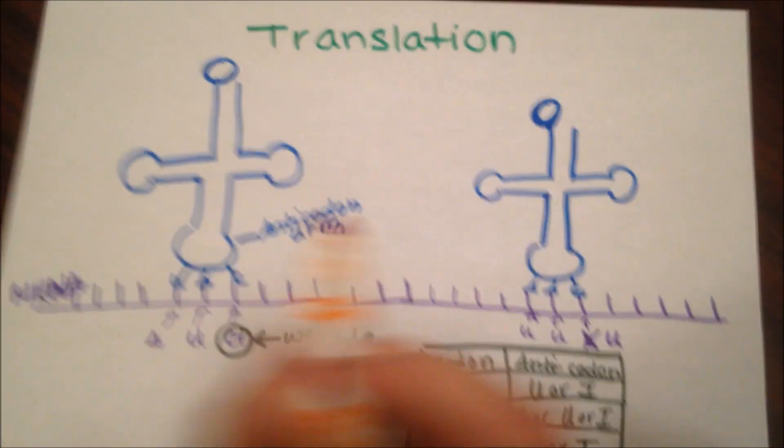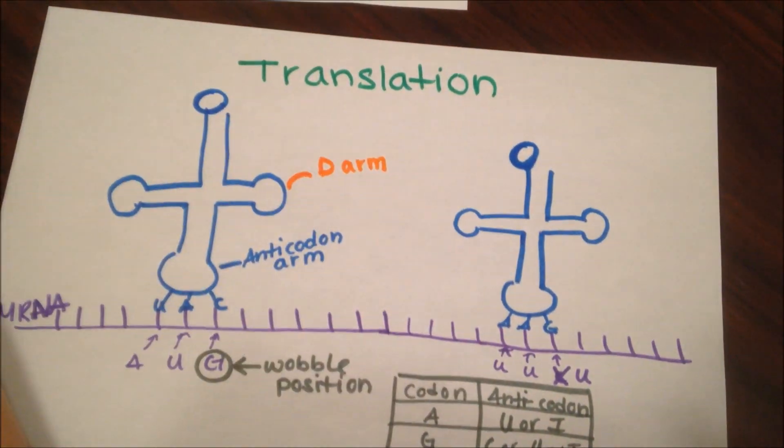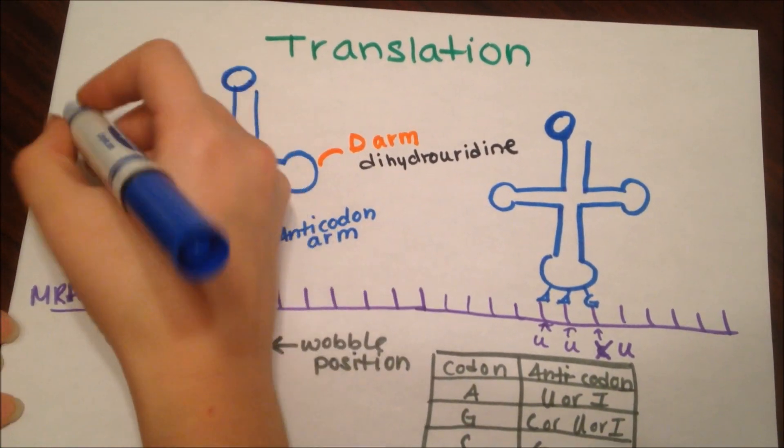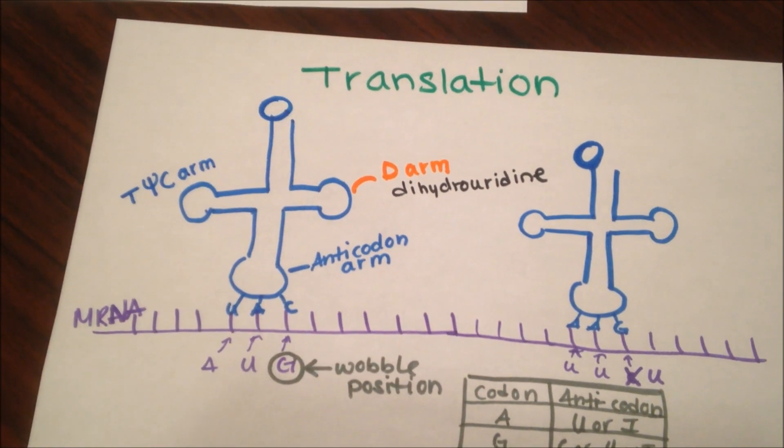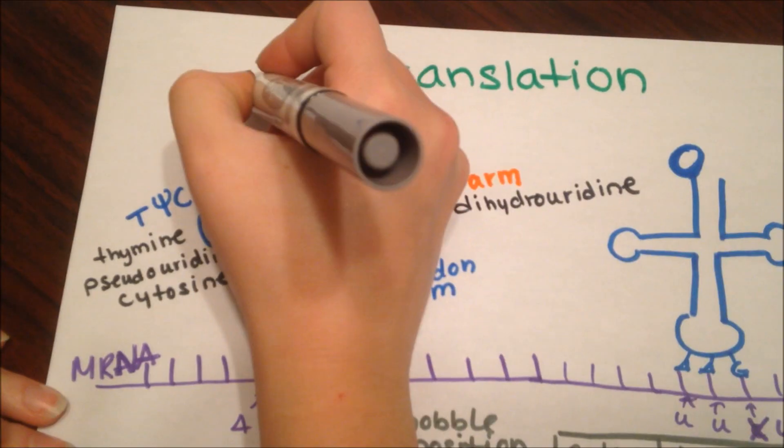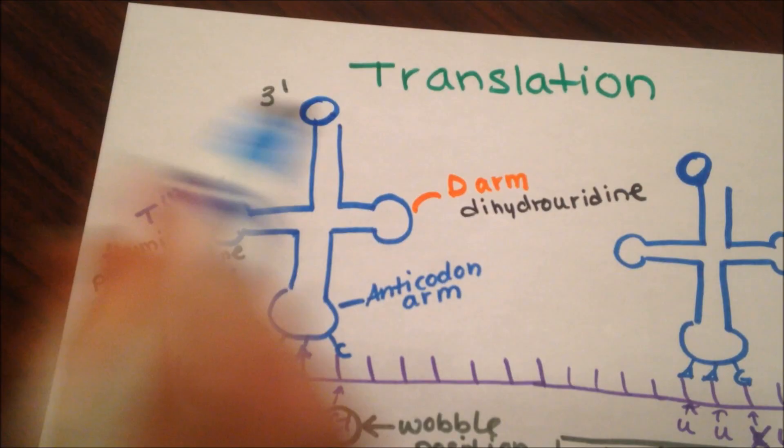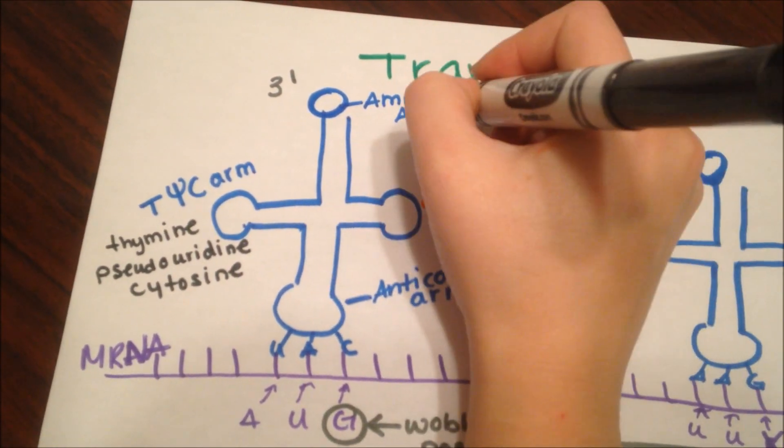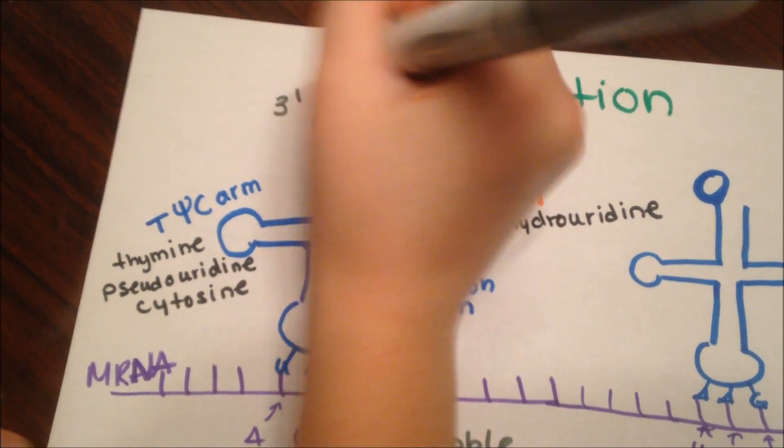This is also known as the wobble hypothesis. Here is the D arm, named because it contains dihydro-uridine bases, which are unusual nucleotides found only in tRNA. Here is the TC arm, named for a sequence of thymines, pseudouridines, and cytosines. Here is the three prime end, characterized with an amino acid bonded to it with an ester bond, which is distinguished by the codon from mRNA. In this case, methionine.